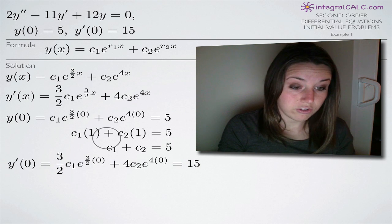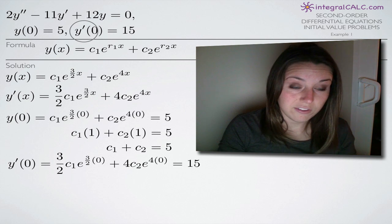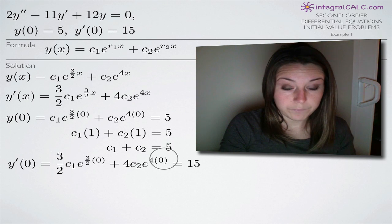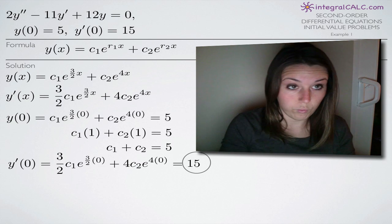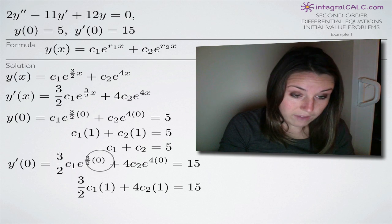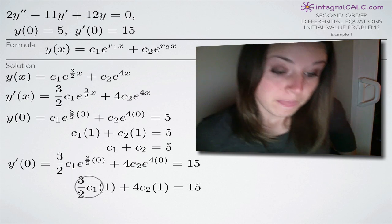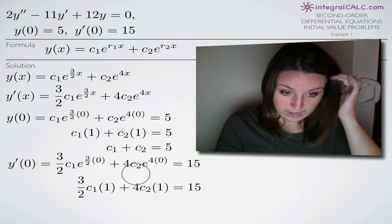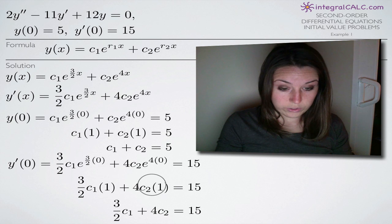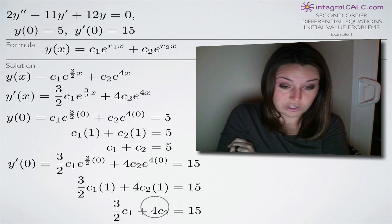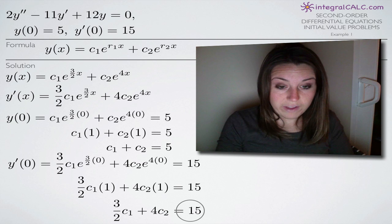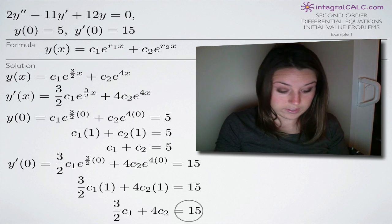For the second initial condition, y'(0) equals 15, we plug in 0 for x in y prime and set it equal to 15. Again, anything raised to the zero power is 1, so e to the 3/2 times 0 becomes 1, leaving us with 3/2 times c sub 1 plus 4 times c sub 2 equals 15. So our two simultaneous equations are: c sub 1 plus c sub 2 equals 5, and 3/2 c sub 1 plus 4 c sub 2 equals 15.